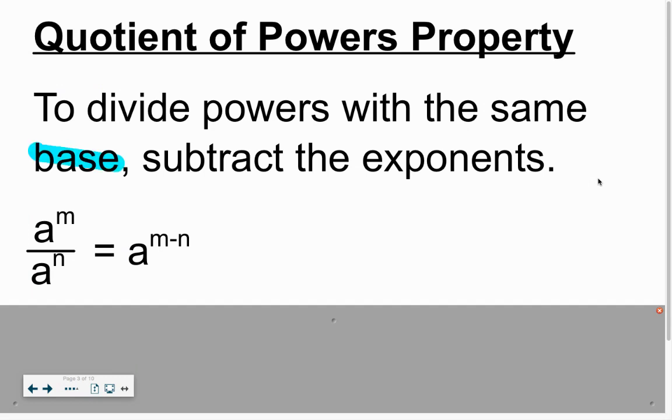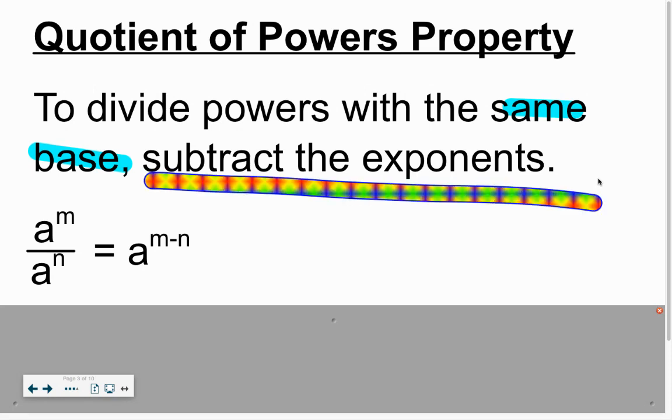This is where when they have the same base, all we're going to do is subtract the exponents. So here it is algebraically, a and a. Those are your base. So keep the base the same and then subtract the powers. What I've always said to myself is I help myself remember that this big old fraction line, I thought it was a subtraction line. So when I saw those powers, I had to remember what to do with them. I just see this fraction line, this dividing line as a subtraction sign. So I take the m minus the n.